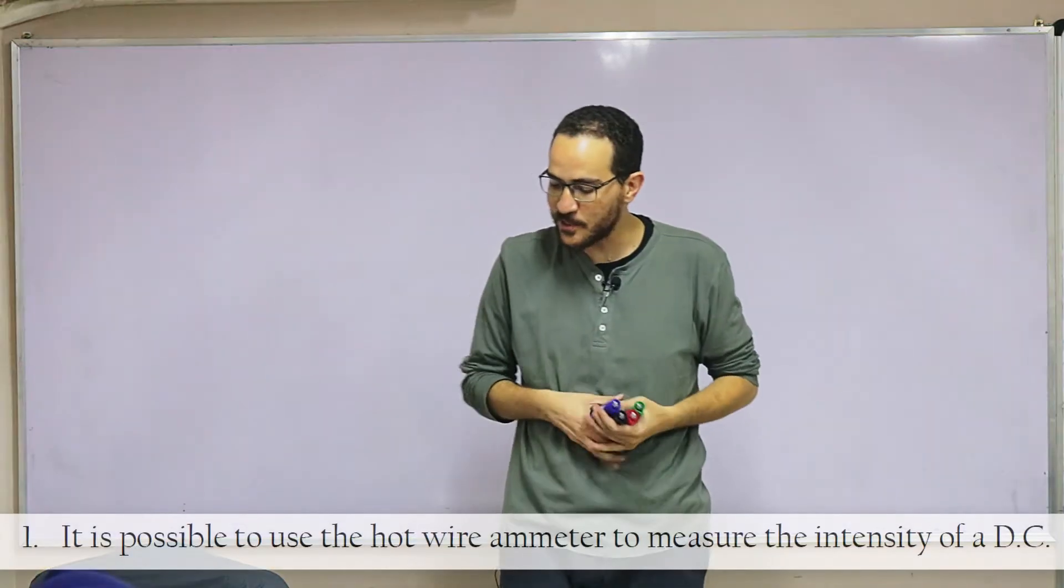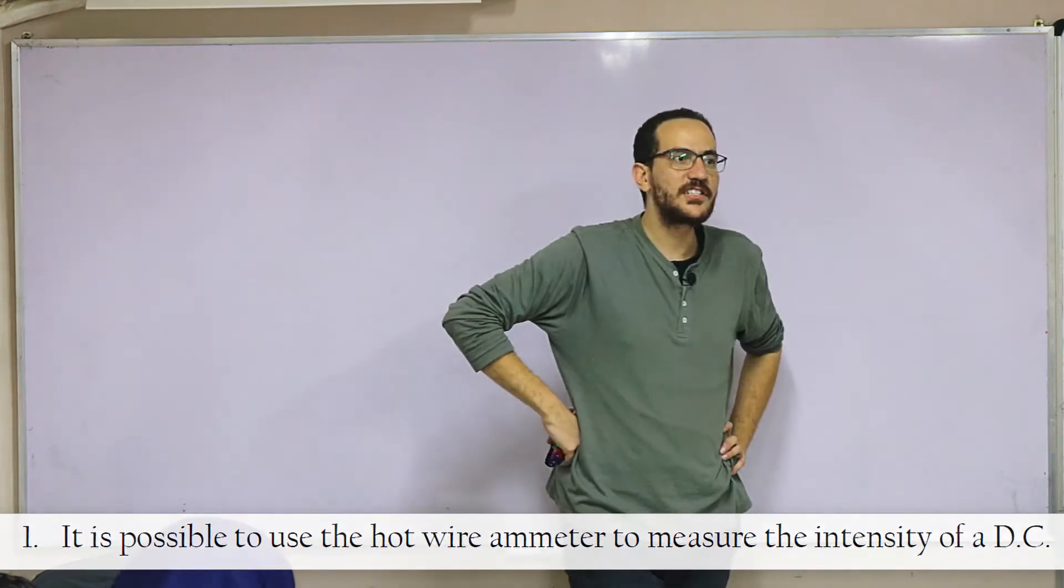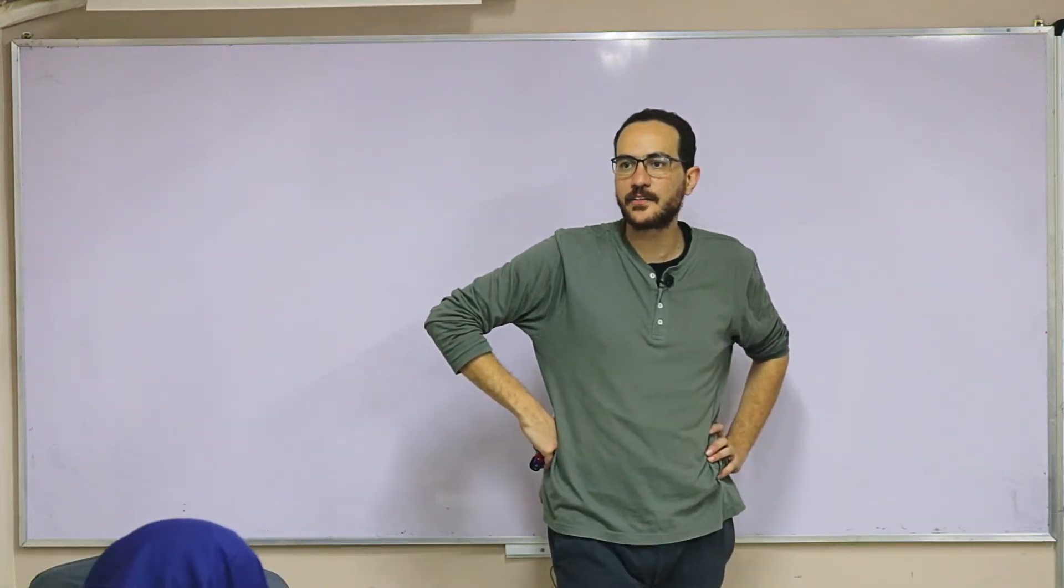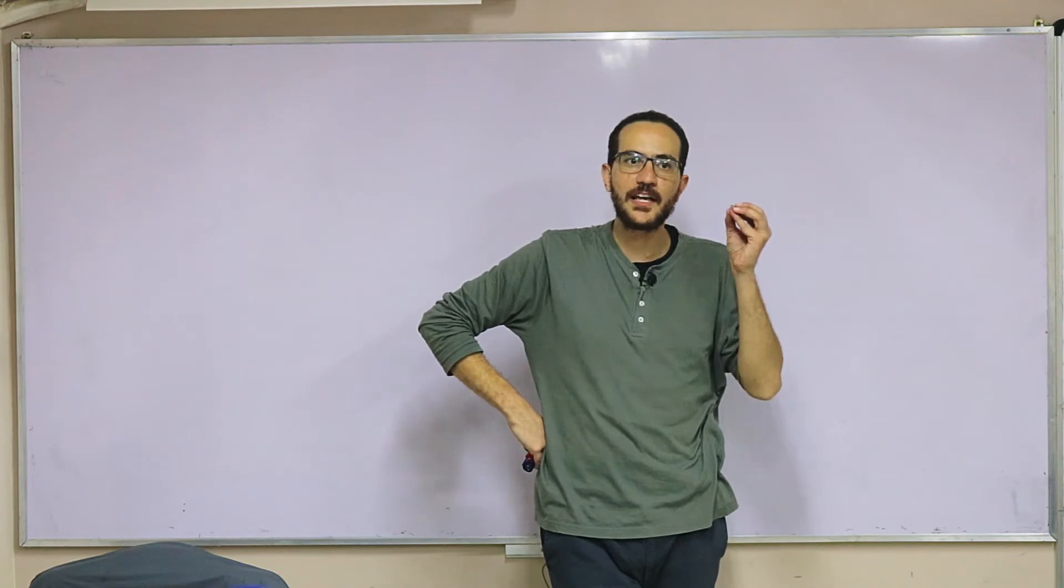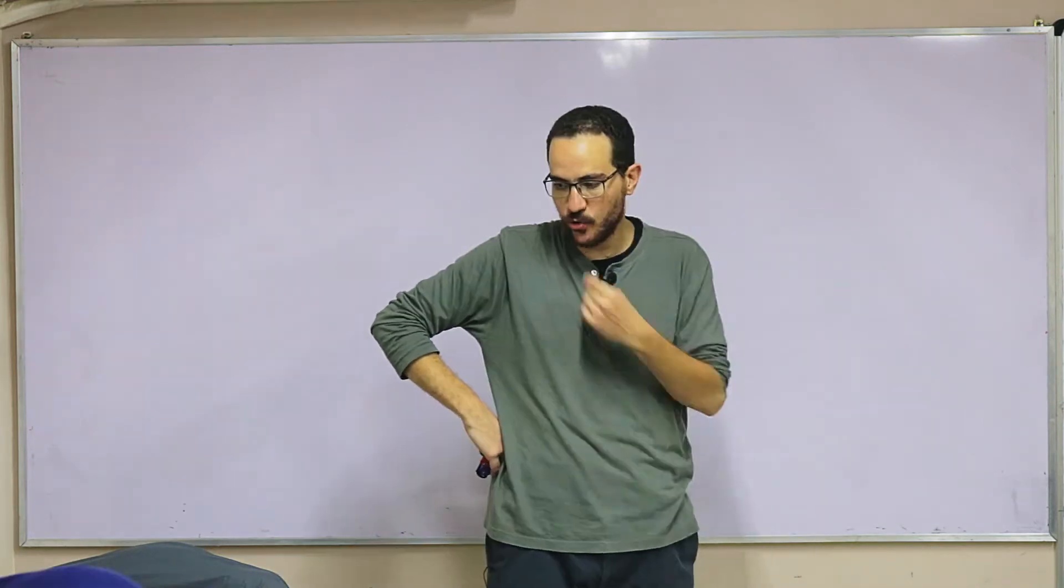Number one: It is possible to use the hot wire ammeter to measure the intensity of a DC current because it is based on thermal effect of electric current, and both AC and DC have the same thermal effect.